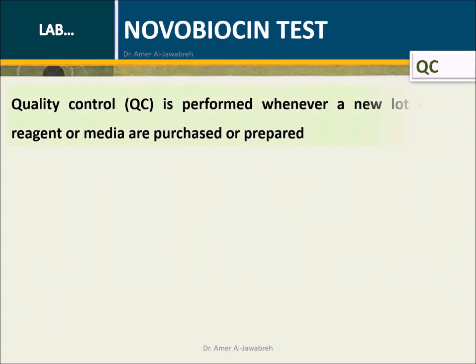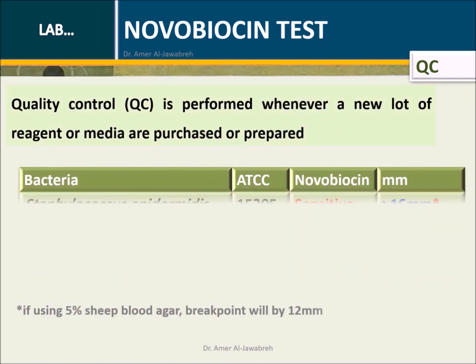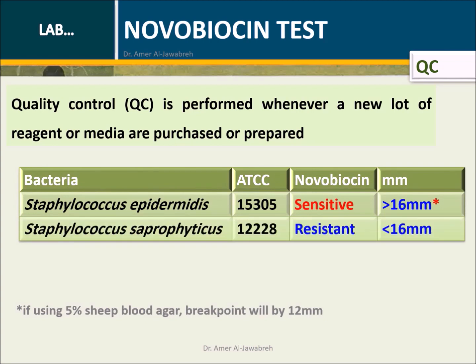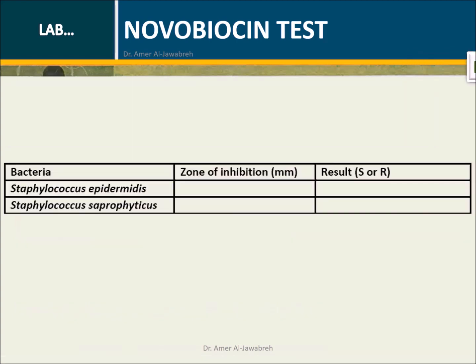Quality control: QC is performed whenever a new lot of reagent or media is purchased or prepared. Listed below are ATCC bacteria and their expected results. Report: Use this table to report results.